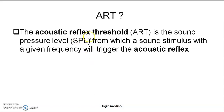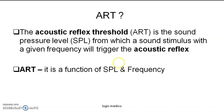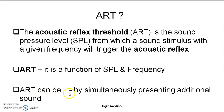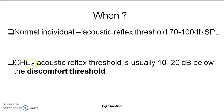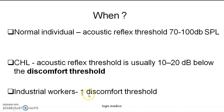ART stands for Acoustic Reflex Threshold — the sound pressure level at which the acoustic reflex gets activated, meaning the minimum level of sound required to stimulate this acoustic reflex. It is a function of both sound pressure level and frequency of sound. Acoustic reflex threshold can be reduced by simultaneously presenting an additional sound to the patient. In normal individuals, the acoustic reflex threshold is 70 to 100 decibels SPL. In patients with conductive hearing loss, the threshold is reduced 10 to 20 decibels below the discomfort threshold, whereas industrial workers will have an increased discomfort threshold but their acoustic reflex threshold would have been minimized.